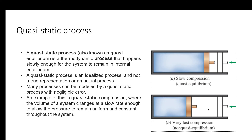A quasi-static process is defined as one that goes from one state to another slowly and continuously — it's a so-called idealized process. Some processes can't be called this, so we call them non-quasi-static or non-quasi-equilibrium processes. For example, you could have a slow compression versus a fast compression — the slow one would be quasi-static, the fast one would not. As we move forward, we'll start to apply these concepts.